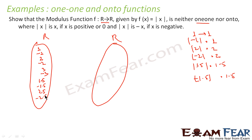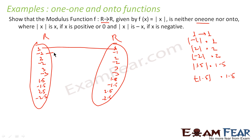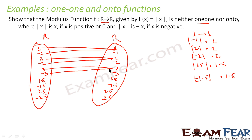In the domain, we can take numbers like 1, -1, 2, -2, 3, 1.5, -1.5, 2.5, -2.5. In the codomain, similarly we have 1, -1, 2, -2, 3, -3, 1.5, -1.5, 2.5, -2.5. Now, |1| = 1, |-1| = 1, |2| = 2, |-2| = 2, |3| = 3, |1.5| = 1.5, |-1.5| = 1.5, |2.5| = 2.5, |-2.5| = 2.5.